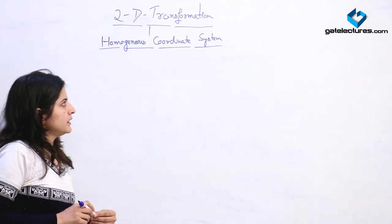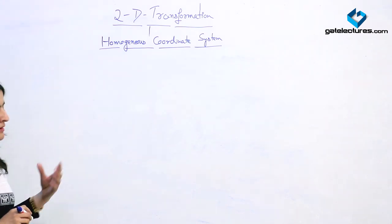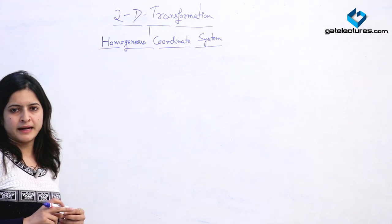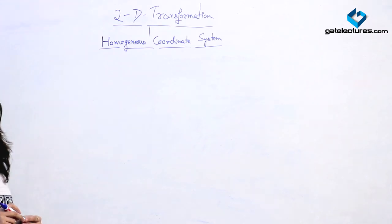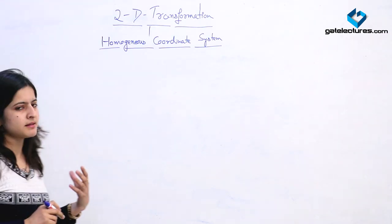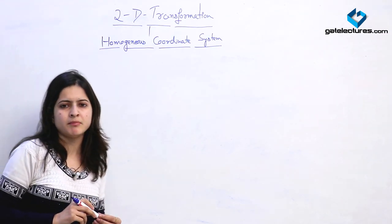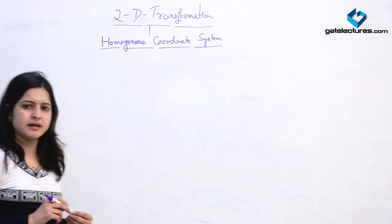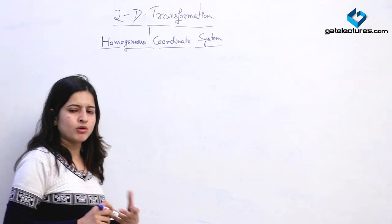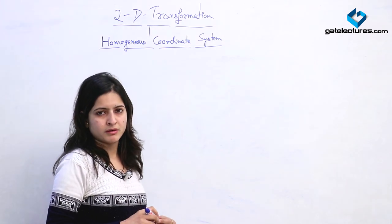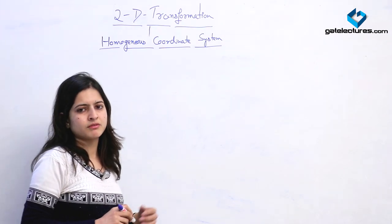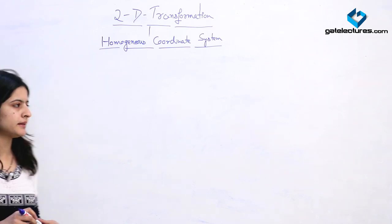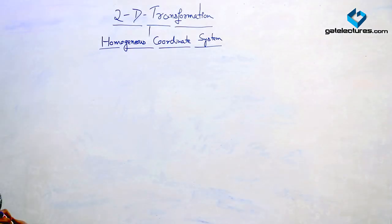This is because translation has an addition matrix operation, whereas the other two — rotation and scaling — have a multiplication operation. When we apply them in a sequence, it becomes more complex to solve. So first we convert them into a 3×3 form and then solve them.